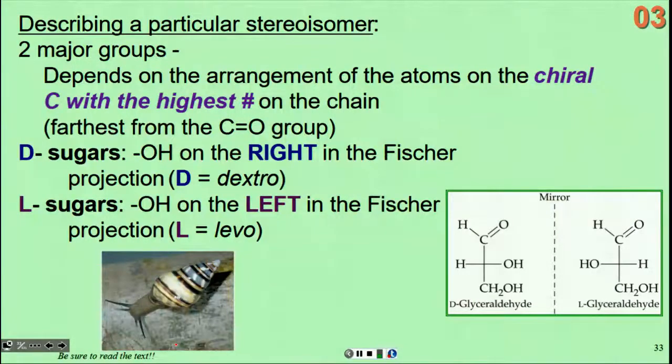We'll use Fischer projections because they simplify our categorizing and recognizing different molecules. Whenever we're describing different stereoisomers, when there's mirror image forms, we said there was a D form and an L form. How do we know which ones are which? There's going to be two major groups, depending on the arrangement of the atoms on the chiral carbon with the highest number on the carbon chain. The aldehyde is always carbon one. The numbers proceed down the chain. The arrangement on that last chiral carbon will determine whether we describe it as a D or an L sugar.